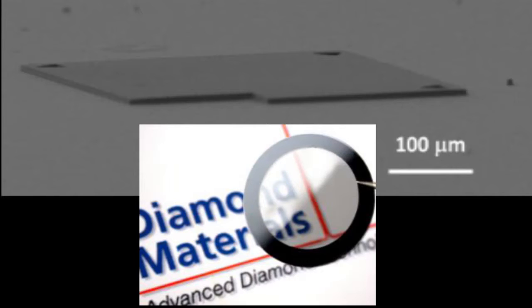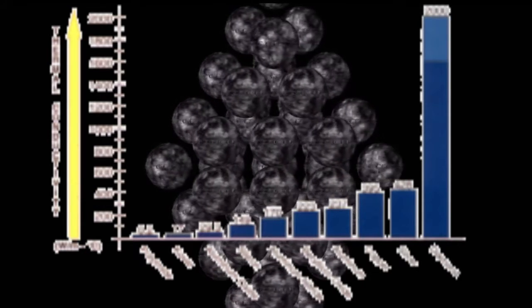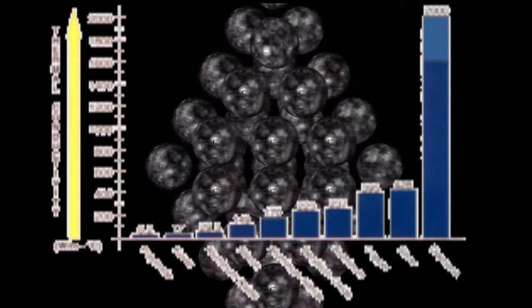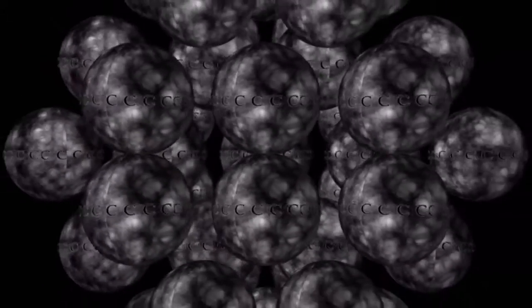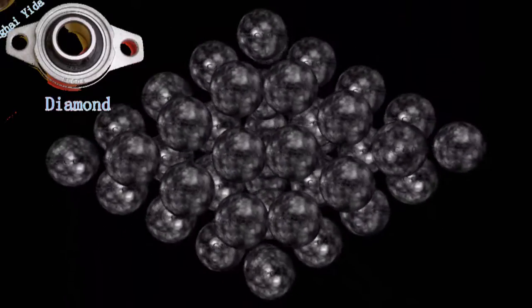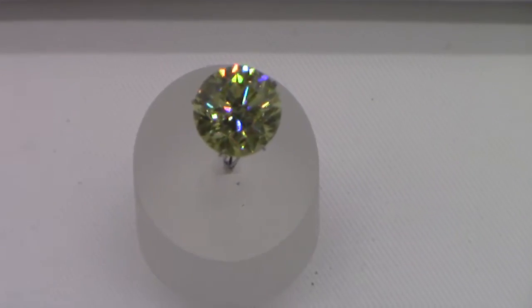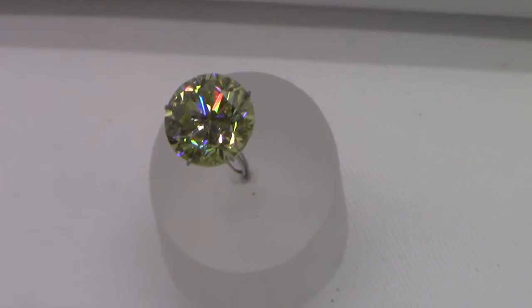Diamond membranes are used as windows in x-ray machines and vacuum chambers, being strong enough to endure the rigors of both. Diamonds have the highest heat conductance of any material, and so can be used as a heat sink to adjust the heat imbalance in high-performance microelectronics. Coating surfaces with a diamond membrane will increase their durability and strength. Diamonds are even used as micro bearings, where such low-friction bearings need to be very resistant to wear. But on the more expensive end, and more famously, diamonds are the premier gemstones for jewelry.